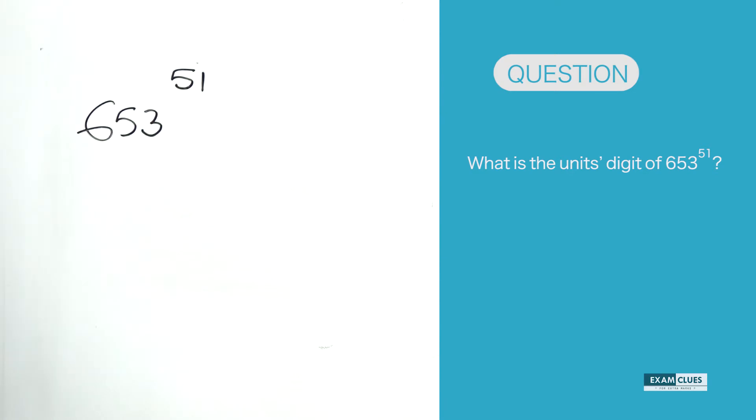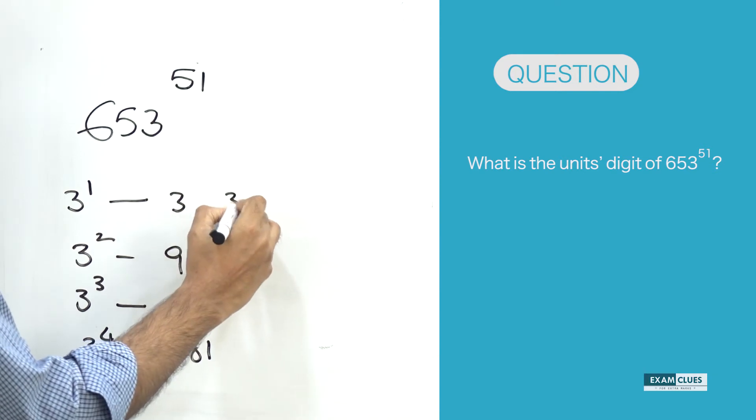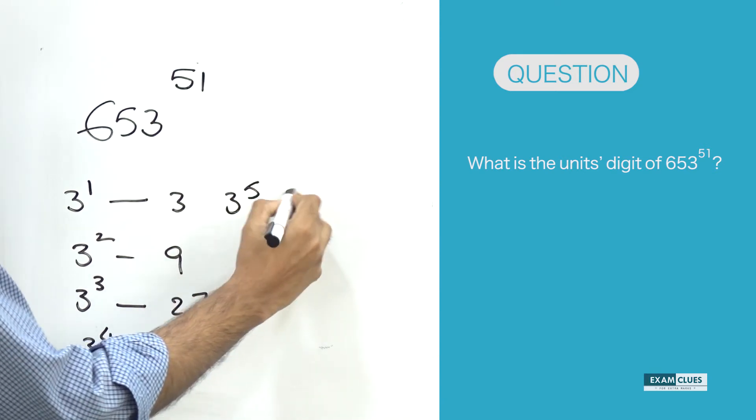Let me explain the cyclicity concept for 3, and you can explore for other digits as well. If you say 3^1 is 3, 3^2 is 9, 3^3 is 27, 3^4 is 81. Let's say 3^5, I will be multiplying this particular number again with 3 only, which will give us 243.